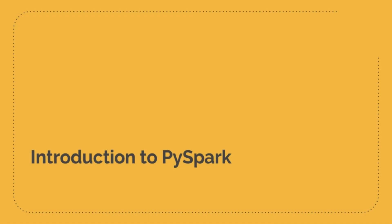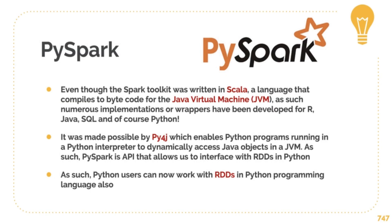So now let's get a quick introduction to using Spark via the PySpark module in Python. PySpark is a Spark toolkit written in Scala; however, it's built as an API in Python so we can access all of the Spark code through Python. It's also been implemented in other languages via wrappers — for R, Java, SQL, and Python. It was made possible by Py4J, which allows Python programmers running a Python interpreter to dynamically access Java objects in a JVM. So we can use PySpark as an API that allows us to interface with the RDDs in Python, which allows Python programmers to work with RDDs within Python.